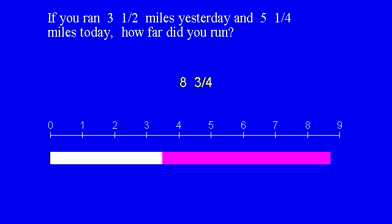As with addition and subtraction with whole numbers, addition and subtraction word problems with fractions involve only one name associated with the numbers. You're adding apples to apples, inches to inches. For example, if you ran three and a half miles yesterday and five and a quarter miles today, how far did you run? Miles is the name that goes with each number.